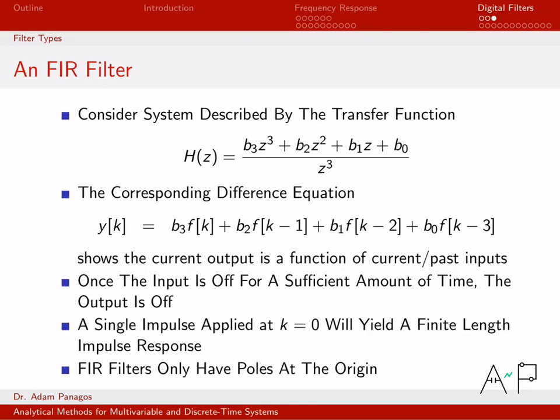FIR filters are a little bit different. Again, let's talk about finite impulse response filters from the perspective of a specific transfer function. Let's say this is my transfer function. Going back to the time domain, this would be my corresponding difference equation that relates the current output to a function of the current input, f[k], and previous inputs, f[k-1], f[k-2], and f[k-3].